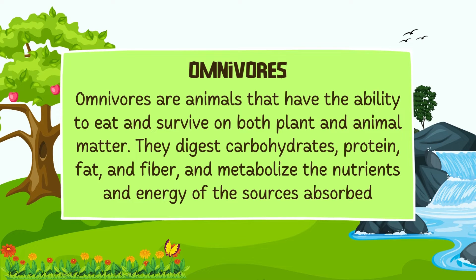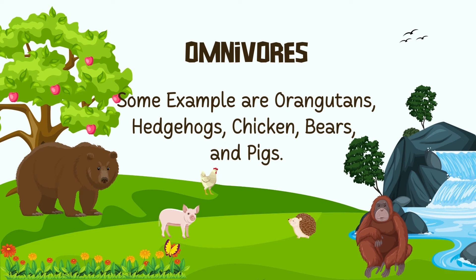Omnivores are animals that have the ability to eat and survive on both plant and animal matter. They digest carbohydrates, protein, fat, and fiber, and metabolize the nutrients and energy of the sources absorbed. Some examples are orangutans, hedgehogs, chicken, bears, and pigs.